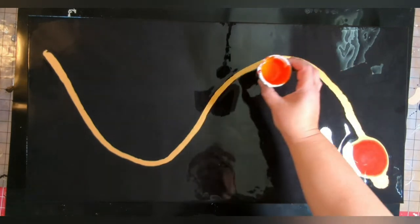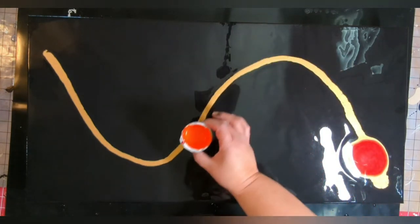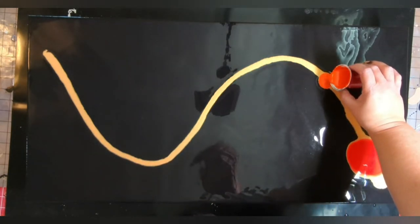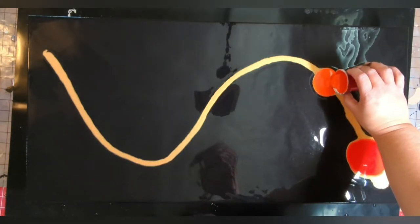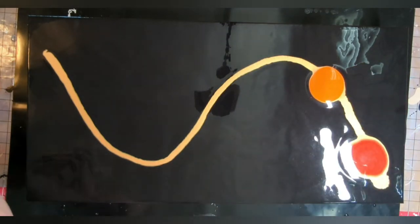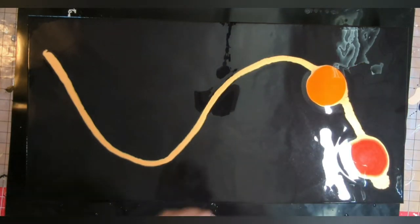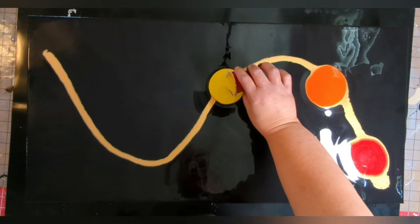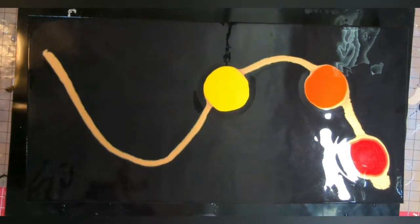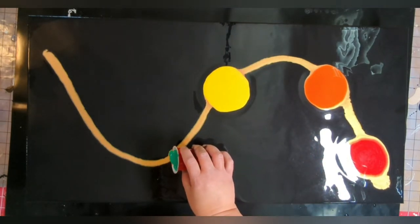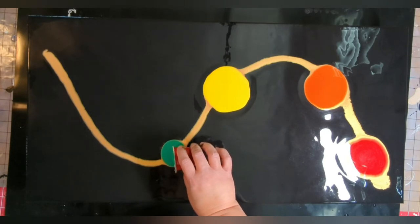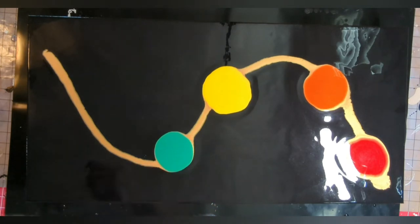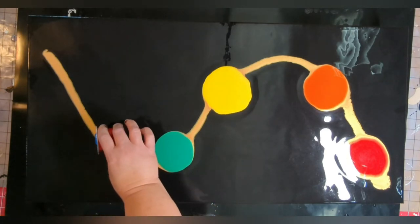So I do orange here, yellow, green, blue, and purple. So orange here. Yellow. Green. Blue.